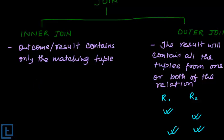Inner join can be divided into three kinds depending upon the joining condition. They are basically theta join, equi join, and natural join.